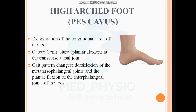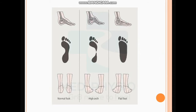Next is high arch foot, called pes cavus. 'Cavus' means high arch — it is the exaggeration of the longitudinal arch of the foot. The main reason behind this is contracture at the transverse tarsal joint. A person with high arch foot typically walks with dorsiflexion of the metatarsophalangeal joint and plantar flexion of the interphalangeal joints of the toes.